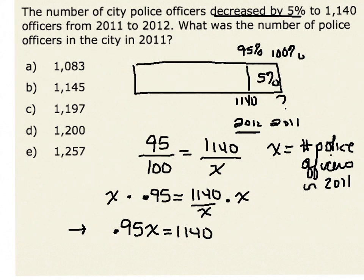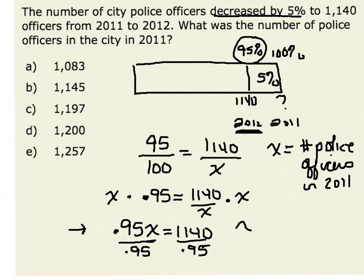Let's take a moment to investigate this equation. Remember, we knew that our 2012 value was 95% of our 2011 value. Therefore, we know that 95% of our 2011 value, or 95% of x, is equal to 1,140, which is what our equation tells us. So in order to solve for x, we can now divide both sides by 0.95.